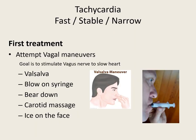If your patient is fast, stable, and narrow, the first thing you're going to attempt are vagal maneuvers — to stimulate that vagus nerve hooked to the parasympathetic nervous system that helps slow your heart down. You can try Valsalva, pinching your nose and blowing out, or have your patient blow on the plunger of a syringe, or have them bear down like having a bowel movement. You can do a carotid massage. Or for pediatric patients, put an ice bag on the face to stimulate that mammalian dive reflex.